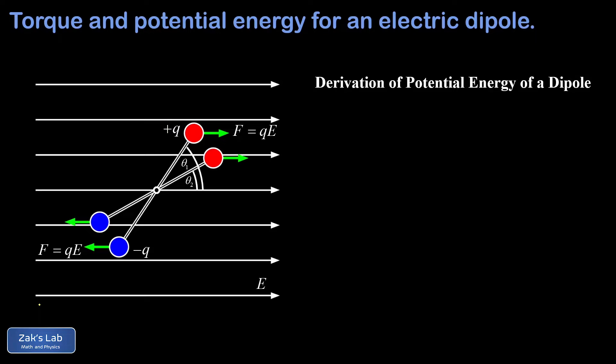Next we want a formula for the potential energy of a dipole. The process is the same as finding any other potential energy function: we look at a change in position and compute the work done by the conservative (electric) force. We start with some initial orientation theta one and allow the dipole to rotate to a final angle theta two, then relate that work to a change in a potential energy function.